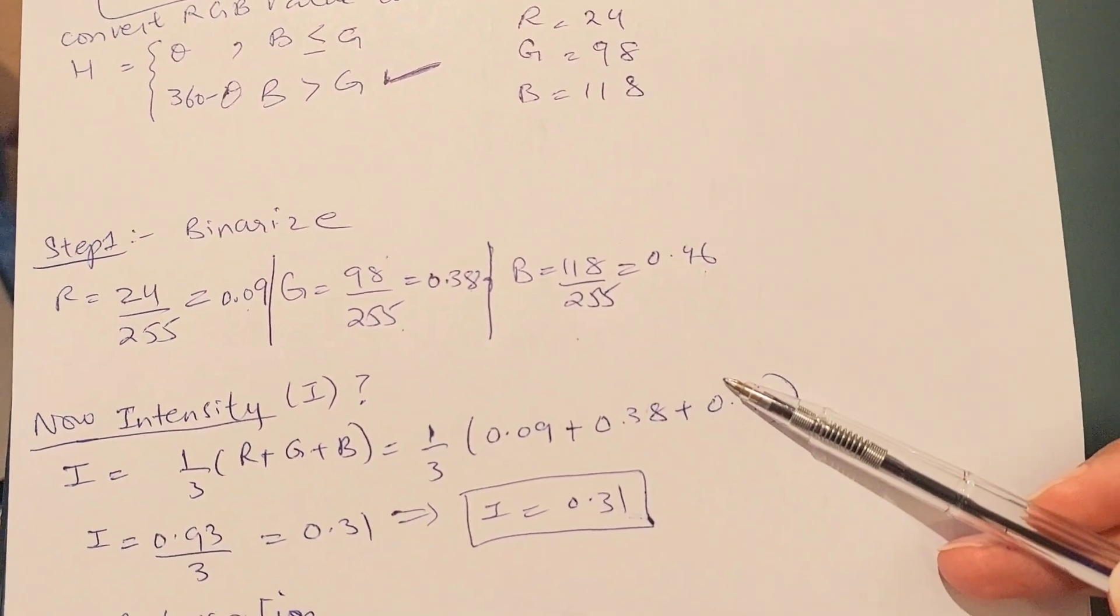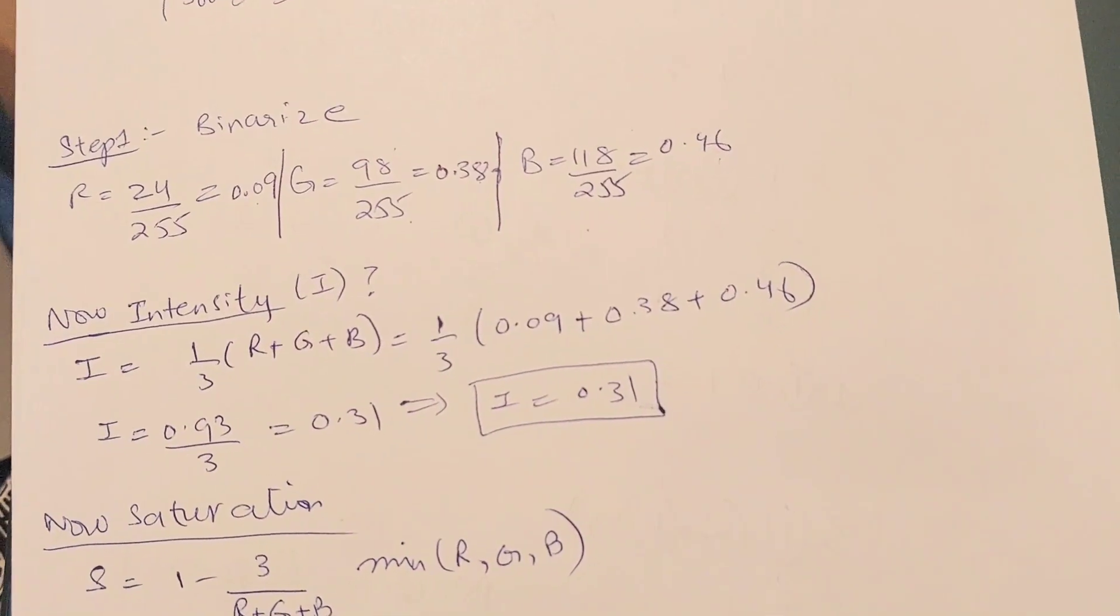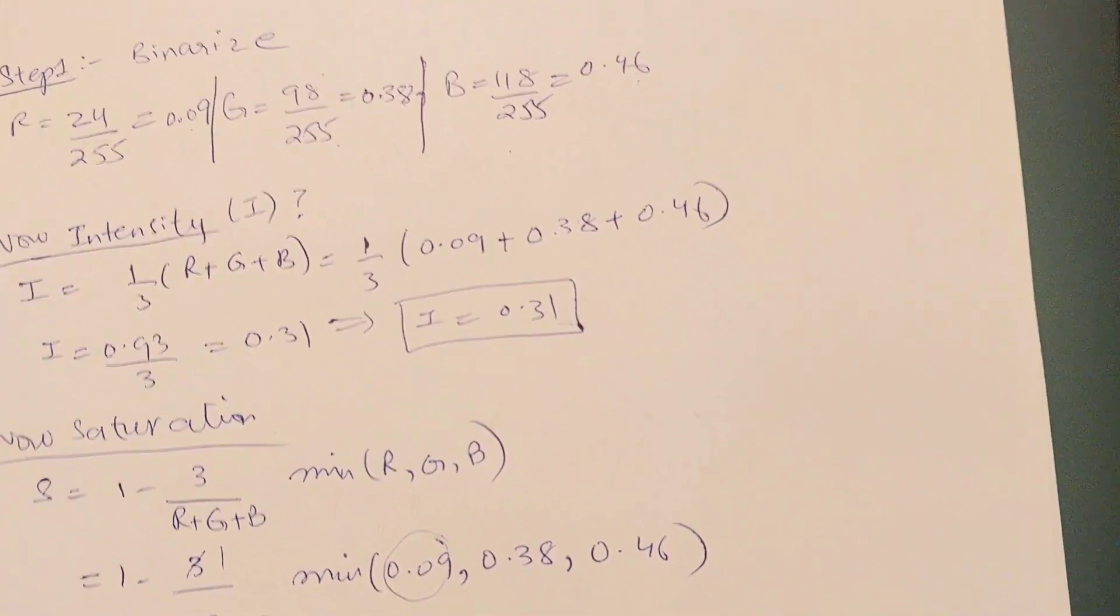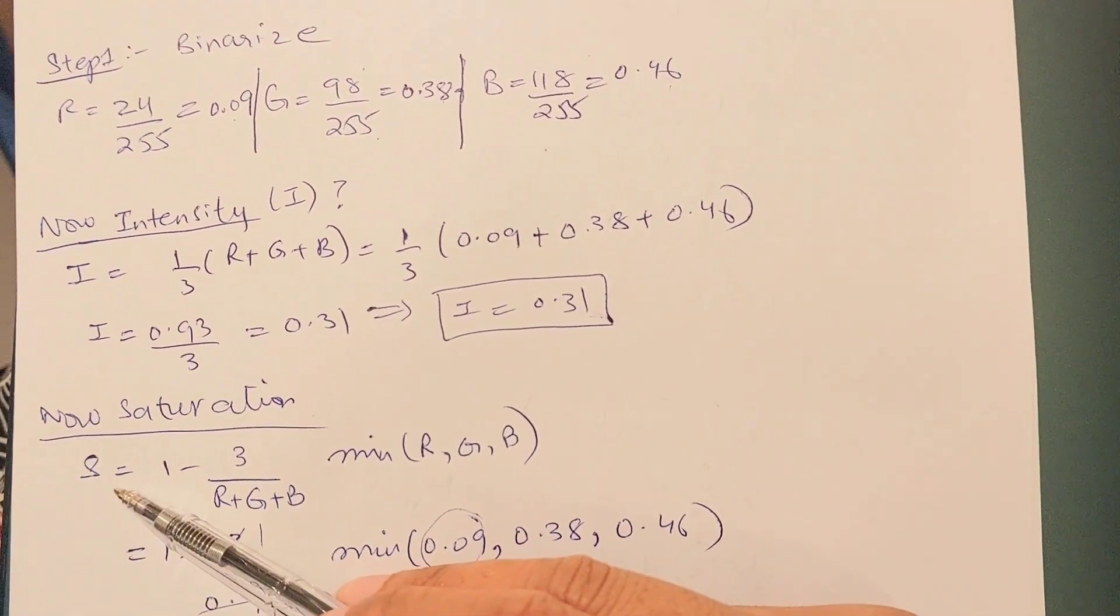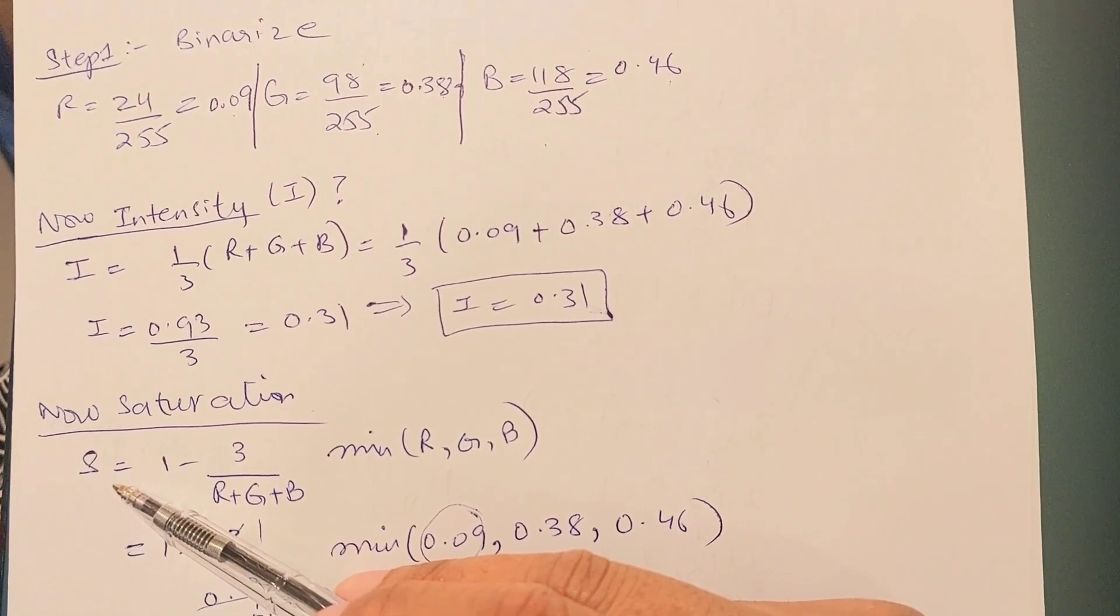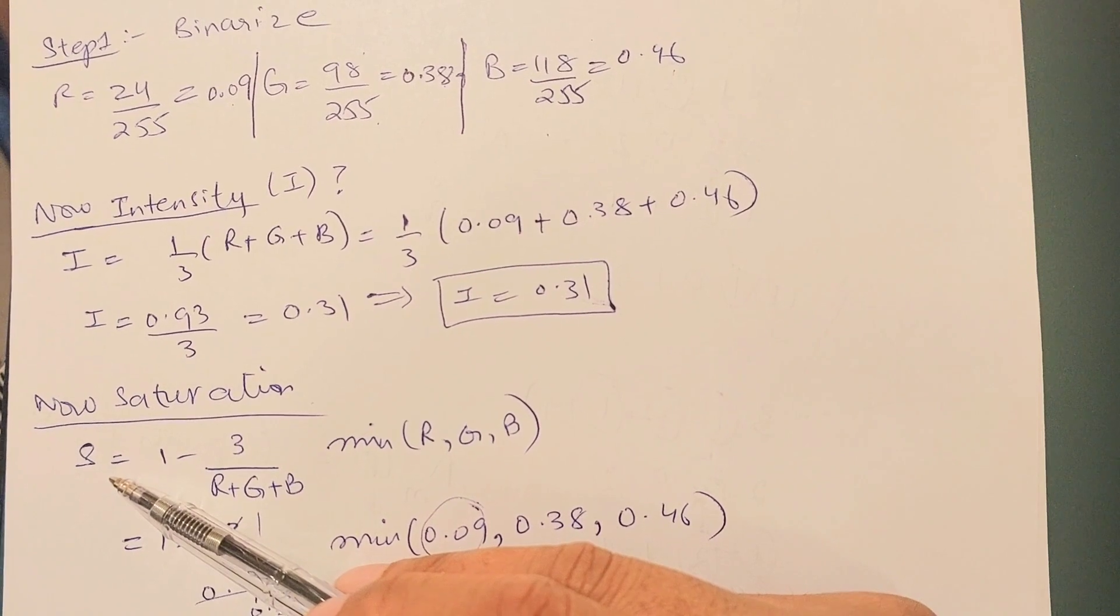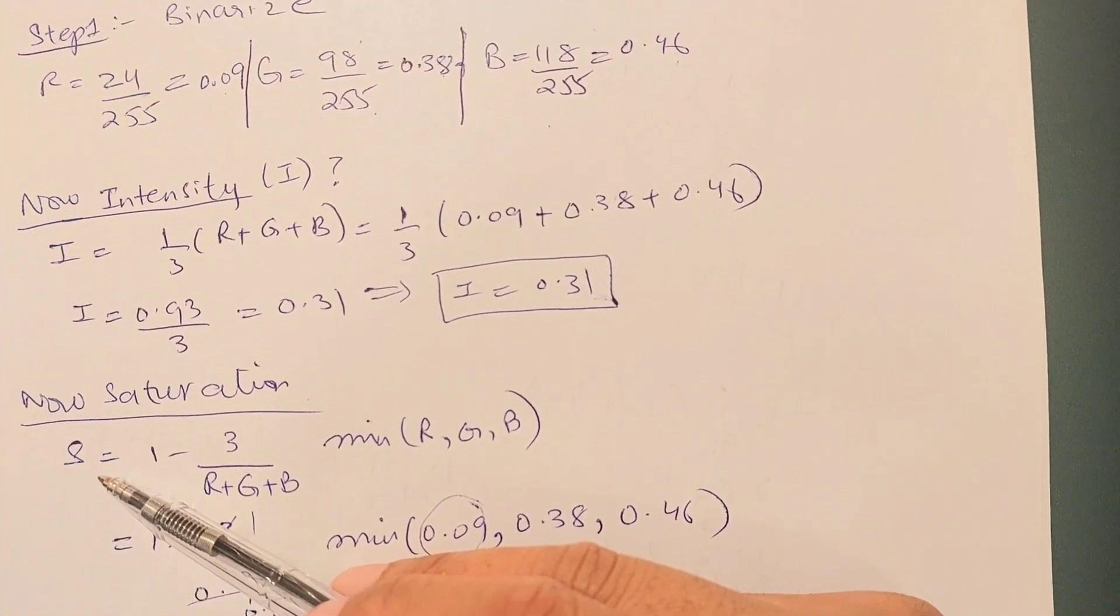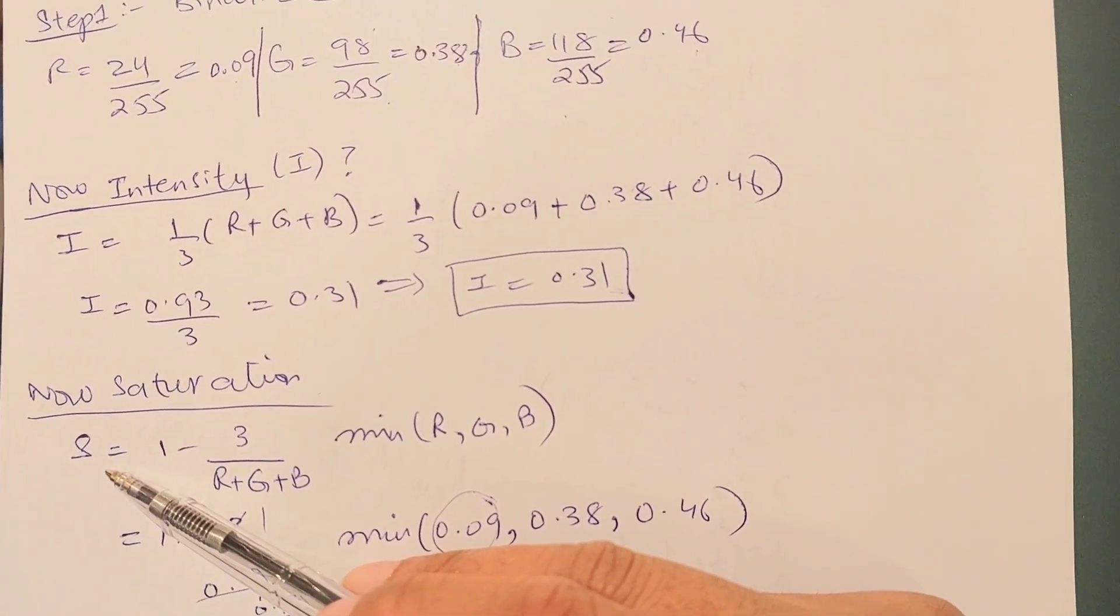It's better to calculate these things yourself with a calculator so you can actually practice. Now we're done with intensity. Let's go to the second easy thing. The second easy formula is saturation. Do you understand what saturation is? Saturation tells about the purity of a color.